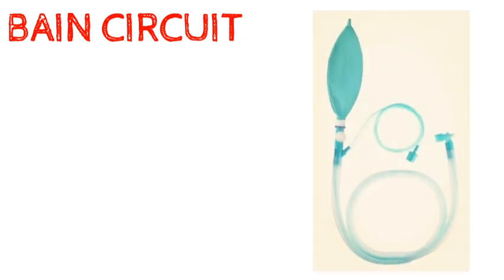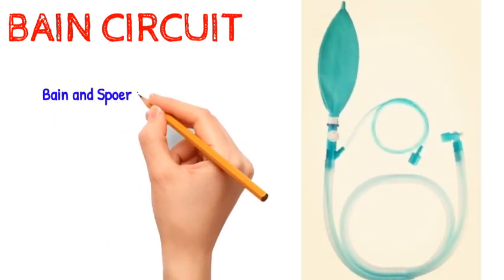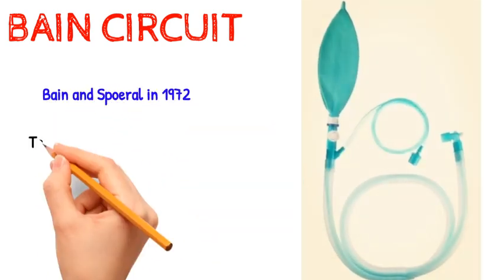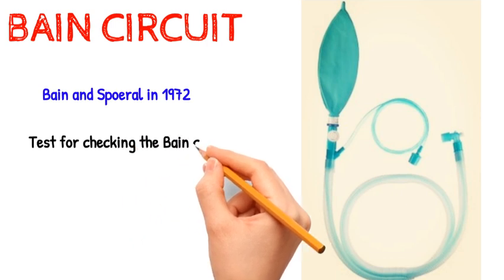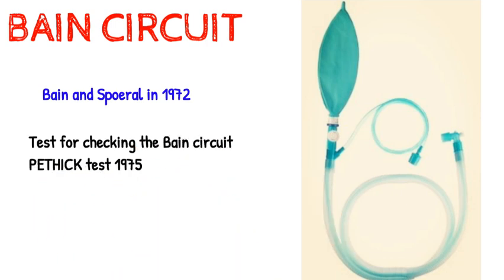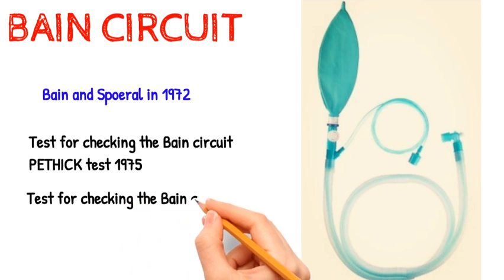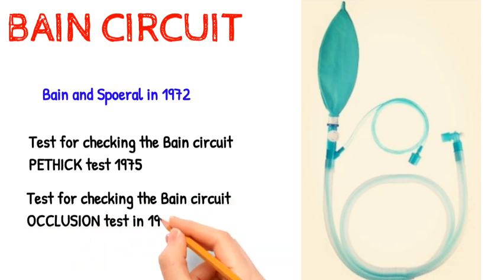The Bain circuit was introduced by Bain and Spoerel in 1972. The test for checking the Bain circuit is the Pethick test, introduced in 1975. Another test for checking the Bain circuit is the occlusion test, introduced in 1977.